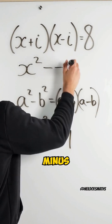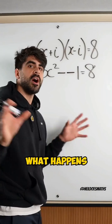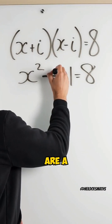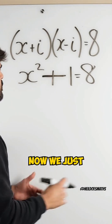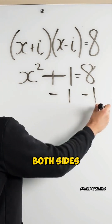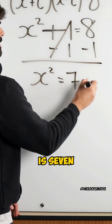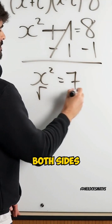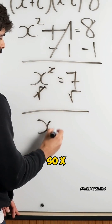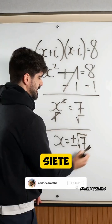So we have minus minus one, which equals plus one. What happens when we have a double negative? Two negatives make a positive. Now we just need to solve for x. I'm going to subtract one from both sides — cancel. x squared is seven, and then we square root both sides. So x is plus or minus the square root of seven.